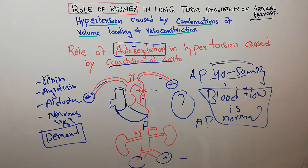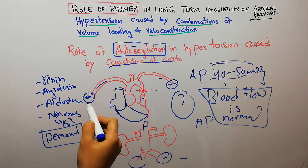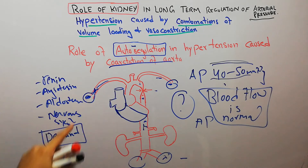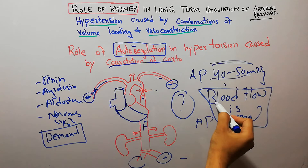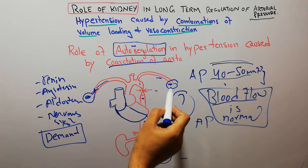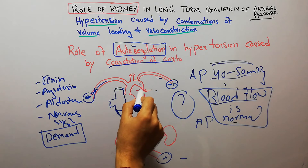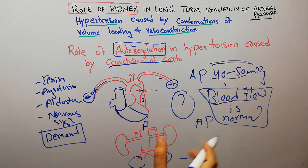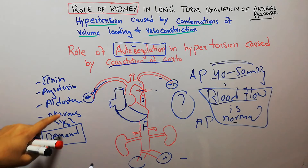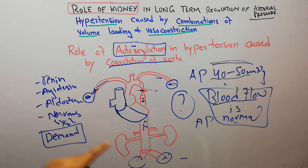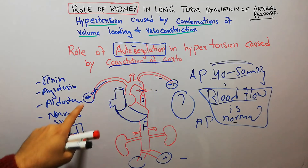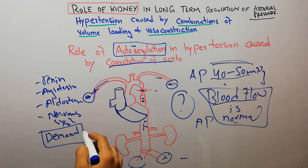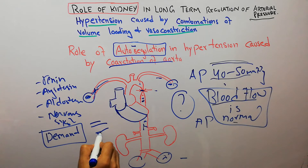In the myogenic theory, when the arterial pressure is high, the tissues basically secrete some substances or cause constriction of the blood vessels so that the blood flow is according to demand. So the blood flow is normal in all tissues — whether in the upper limbs or the lower limbs, whether proximal or distal to the constriction. This is not due to the level of renin, angiotensin, aldosterone, or nervous stimulation, but rather due to autoregulation. If more blood flow is coming, tissues cause constriction and narrowing of the blood vessel.